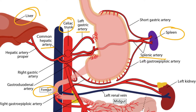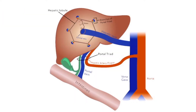Now let's focus our attention on the common hepatic artery. The common hepatic artery gives rise to the hepatic artery proper, which then supplies the liver. I want to draw your attention to the hepatic artery proper — it supplies the liver and branches from the celiac trunk, as we just mentioned. This particular image is simplified and does not show the celiac trunk, but keep that in mind.